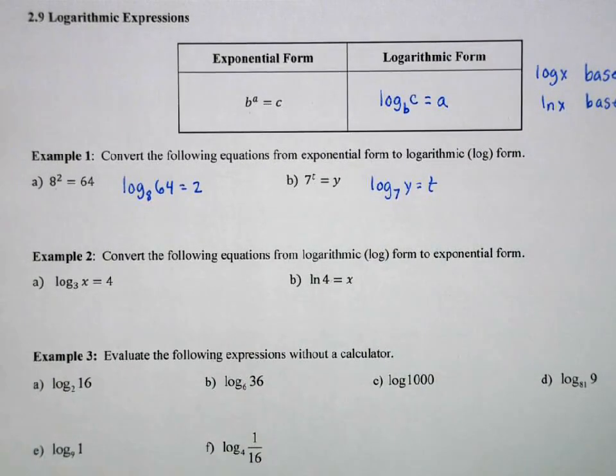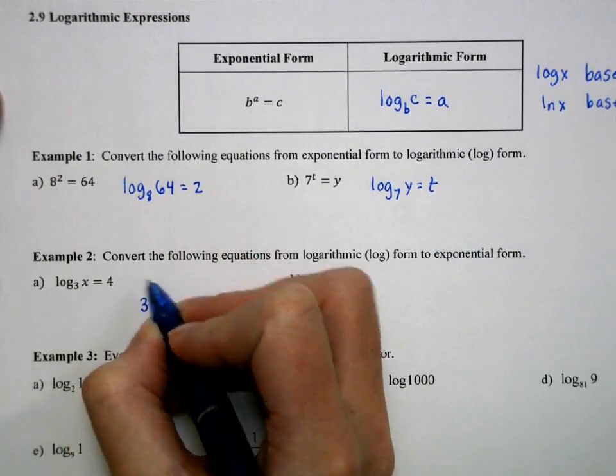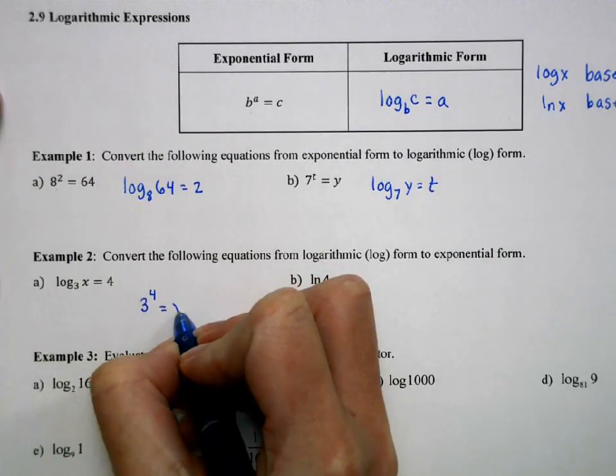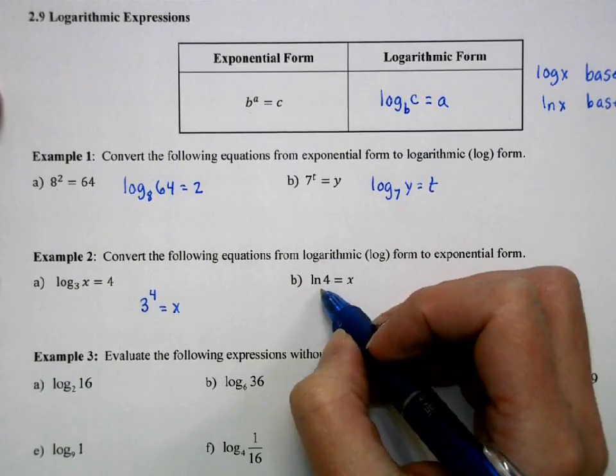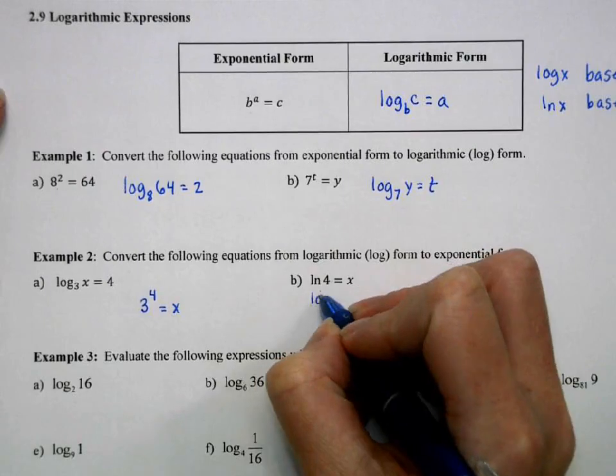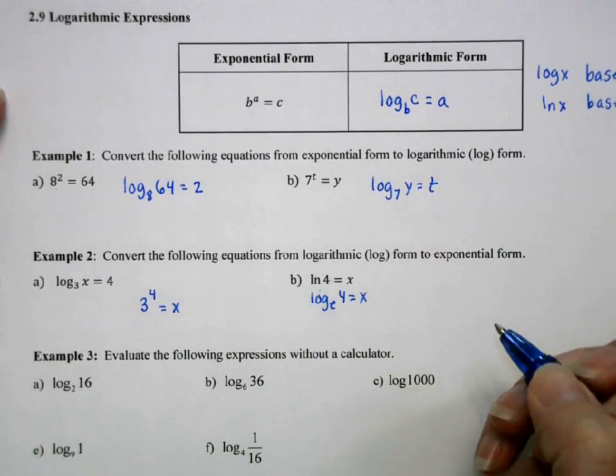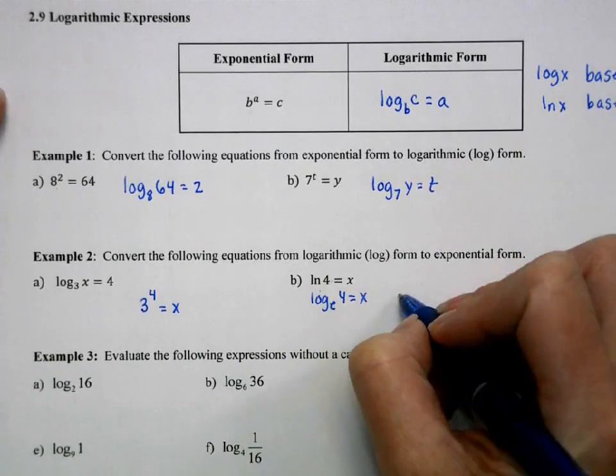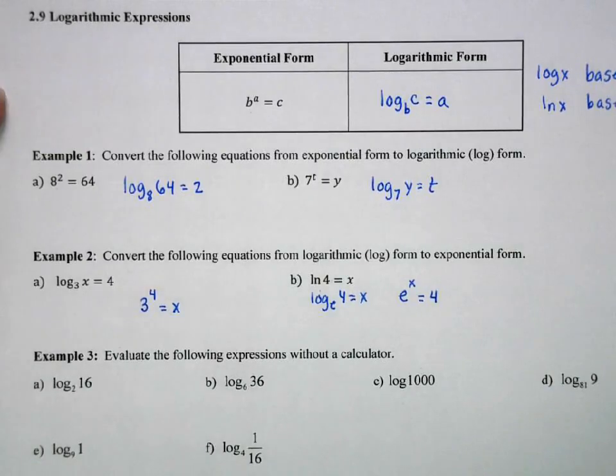Now going the other way. Base of the log is now the base of the exponent. This is our exponent, equals whatever is in front of the log. Here, this is the same as log base e, although we don't typically write it like that. But just to emphasize, the base of this is e. So this becomes e to the x equals 4.